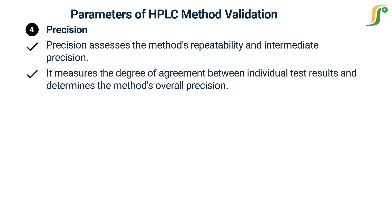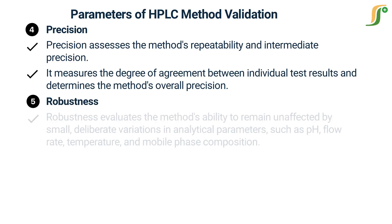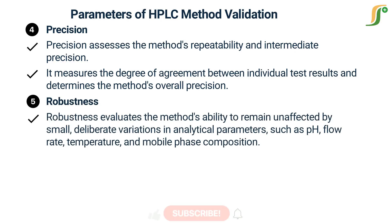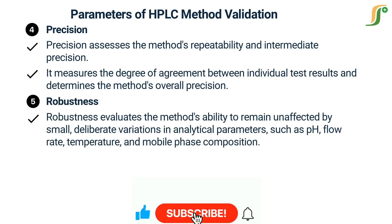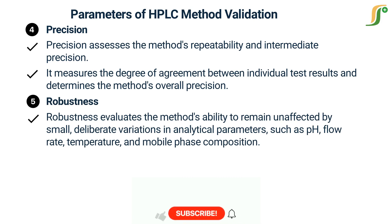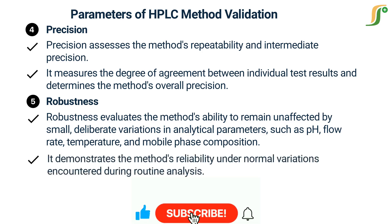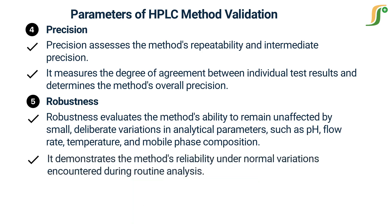The fifth parameter is robustness. Robustness evaluates the method's ability to remain unaffected by small, deliberate variations in analytical parameters, such as pH, flow rate, temperature, and mobile phase composition. It demonstrates the method's reliability under normal variations encountered during routine analysis.